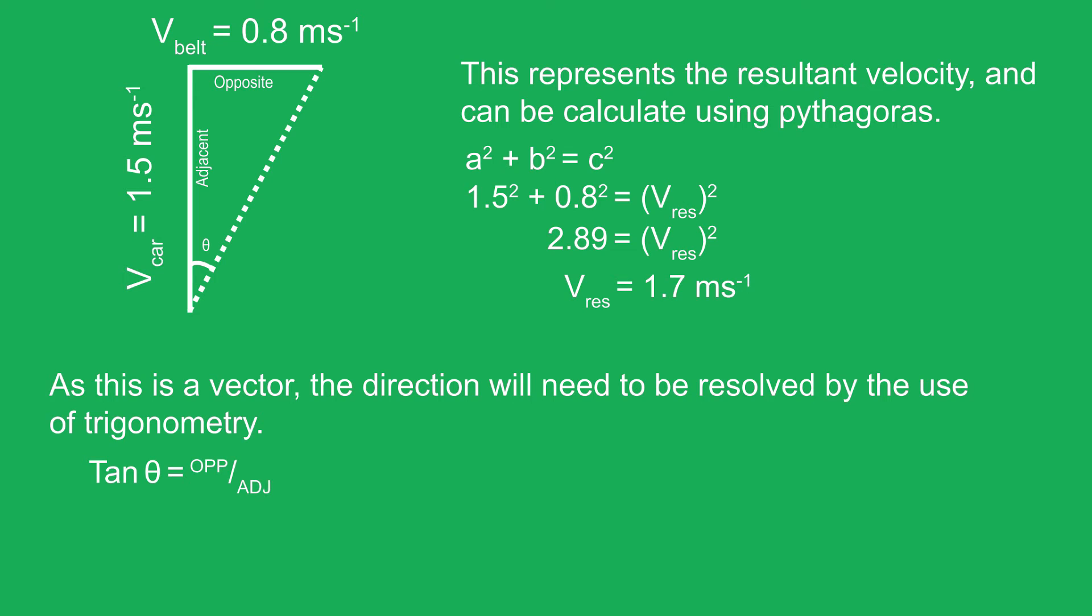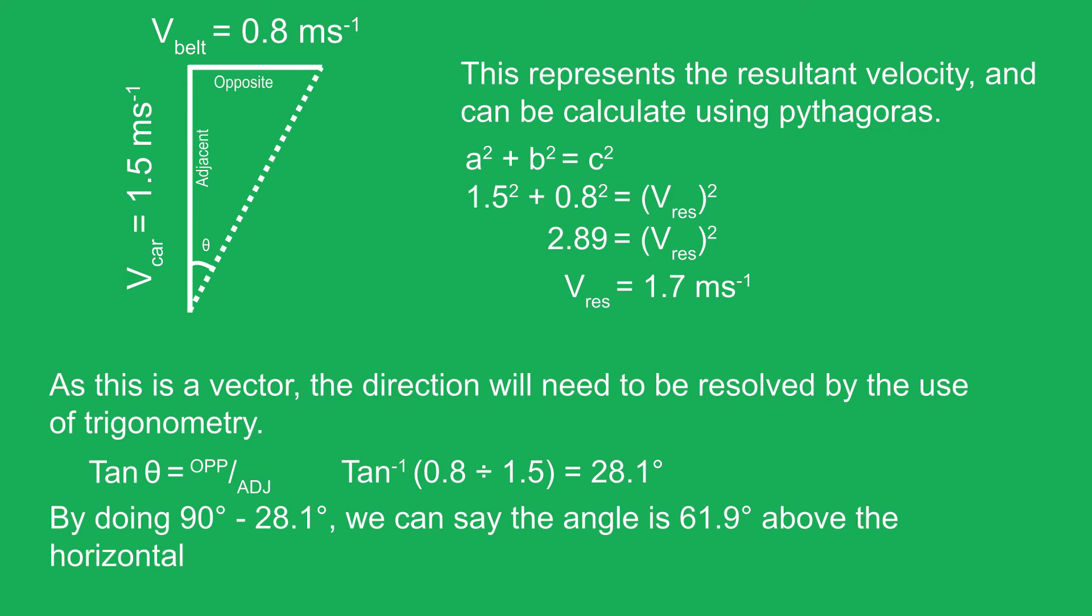Tan theta is equal to the opposite divided by the adjacent. Theta is equal to 28.1 degrees. By doing 90 take away 28.1 degrees, we can say the angle is 61.9 degrees above the horizontal.